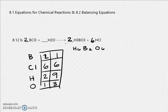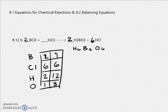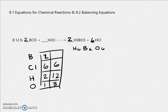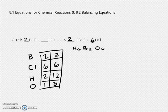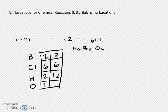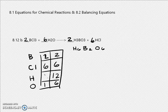Now it's going to be 6 plus 6 equals 12. B is 2 and Cl is 6. Now put a 6 over here — hydrogen becomes 12 and oxygen becomes 6. Let's verify everything is balanced now.